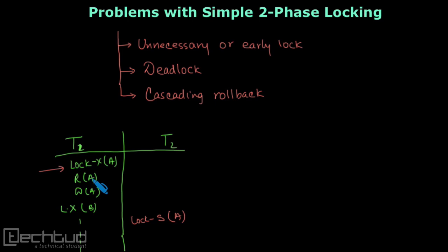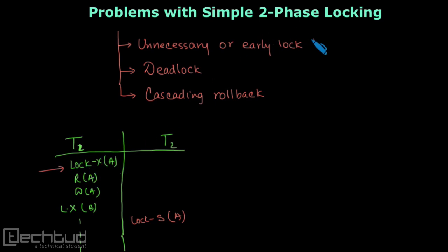Meanwhile, if transaction T2 wants to acquire even a shared lock on data item A just to read it, it cannot, because T1 already holds an exclusive lock on A. T2 has to wait until all of T1's operations are finished. This is basically unnecessary wait due to early locking.